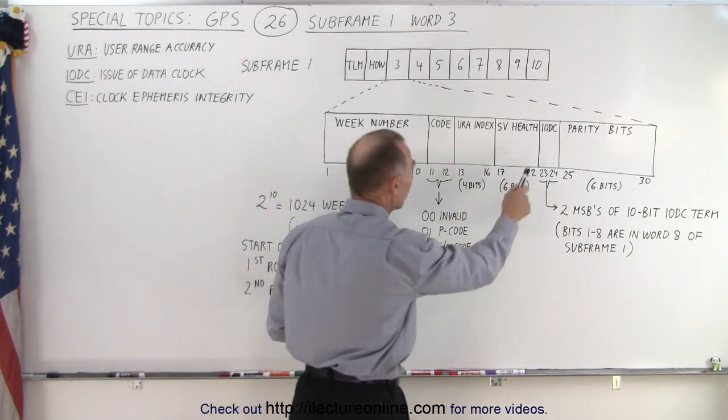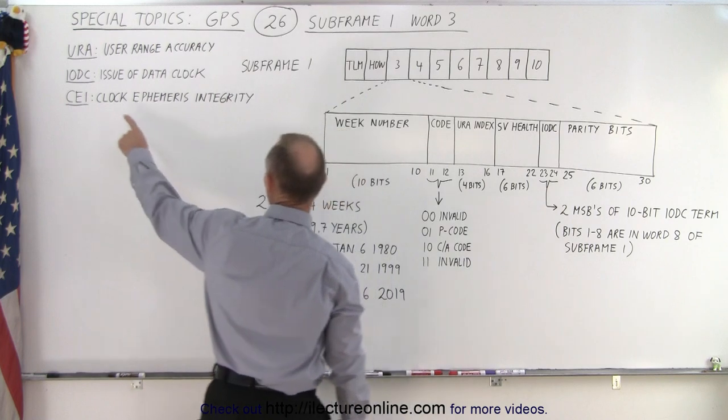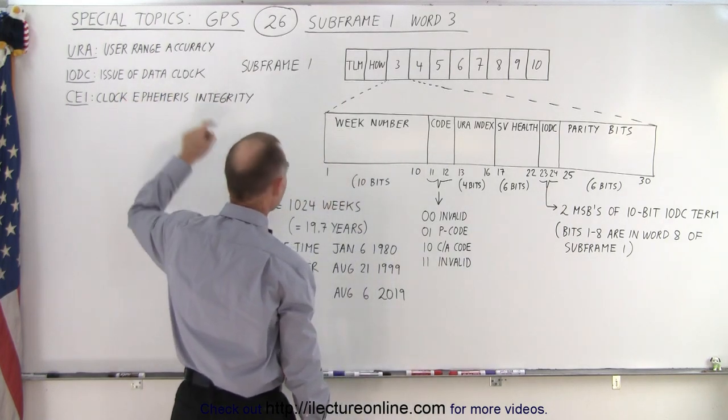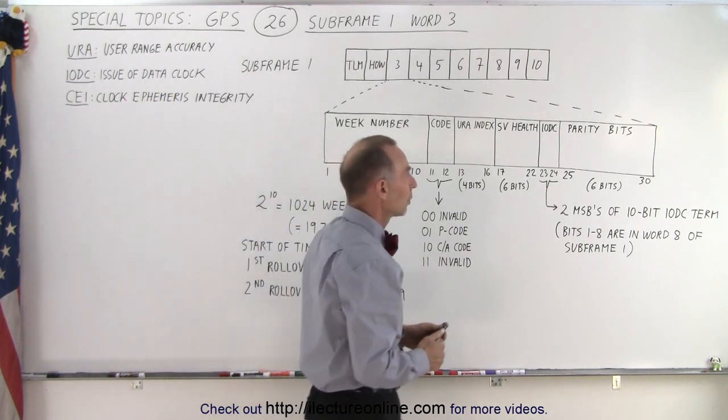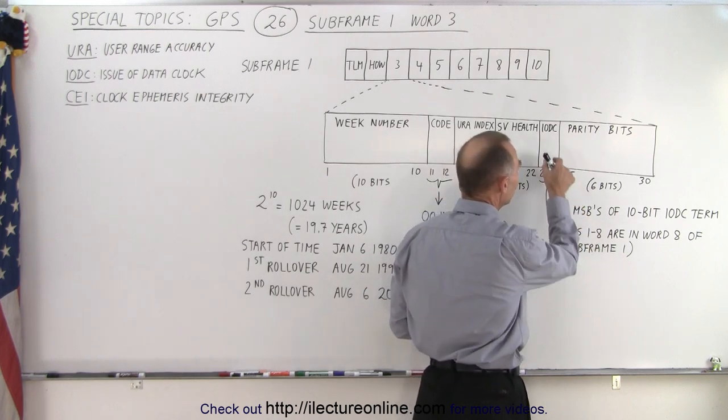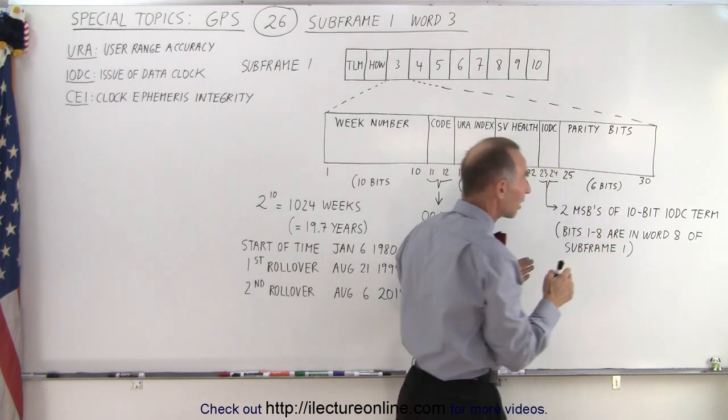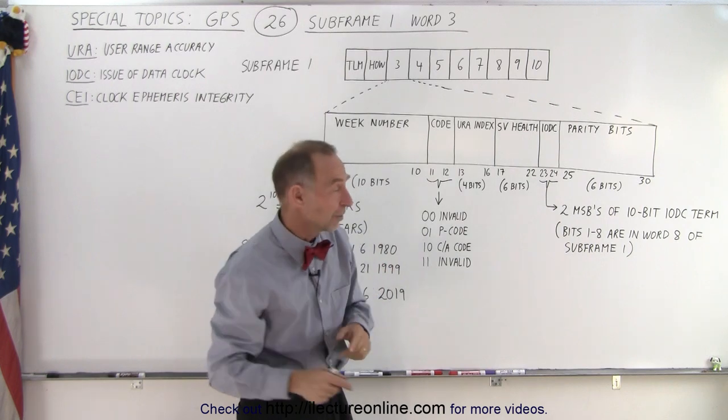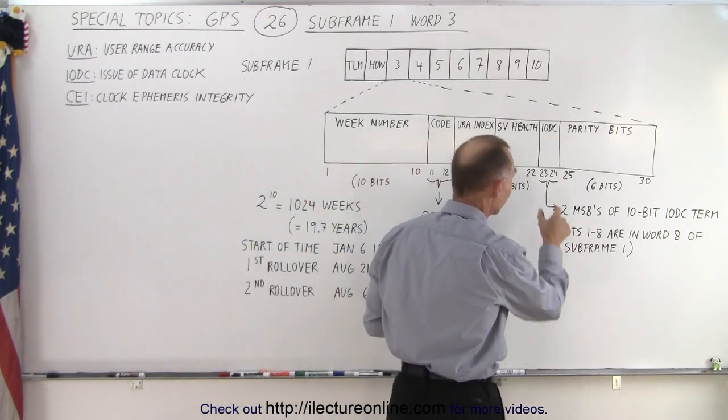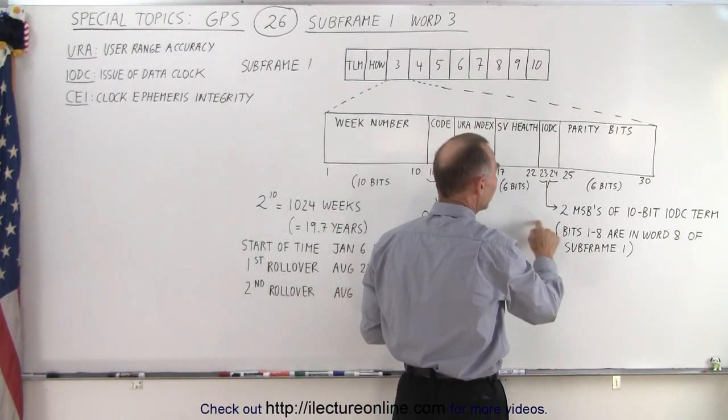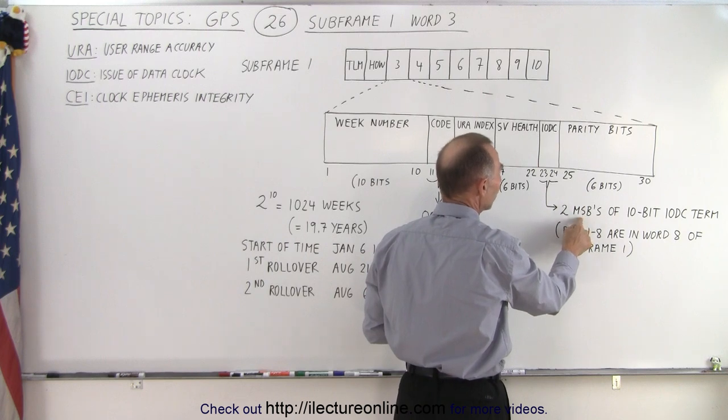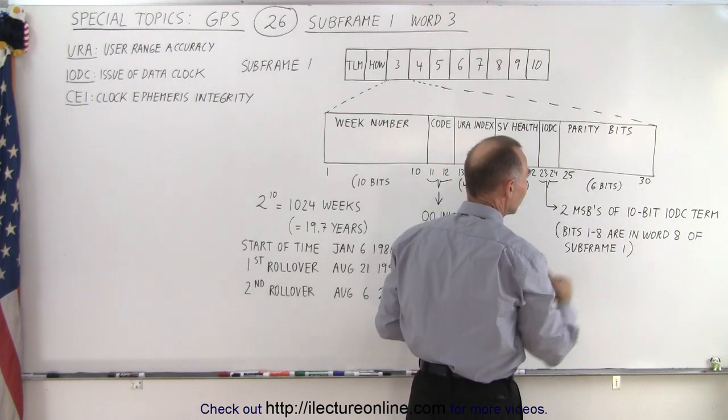Then the next two bits are what we call the IODC, which is defined over here as the Issue of Data Clock. We have two MSBs here and notice the Issue of Data Clock actually needs 10 bits, but there wasn't any room for 10 bits here. So we took these two available bits and called them the two most significant bits of the 10-bit IODC term.